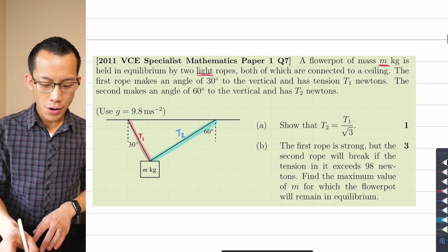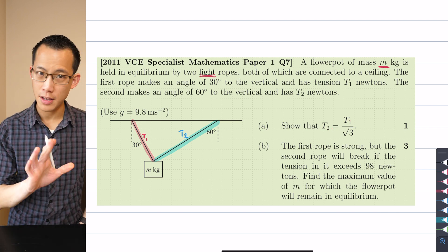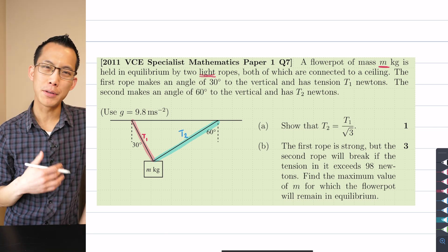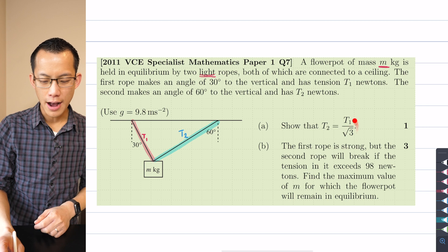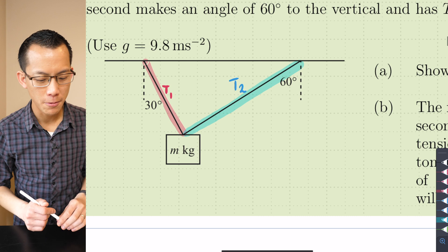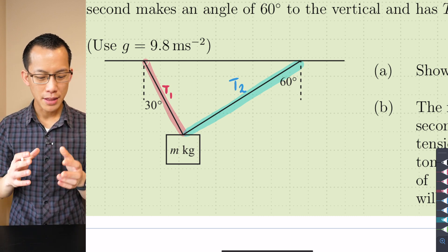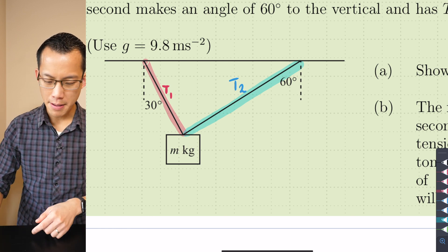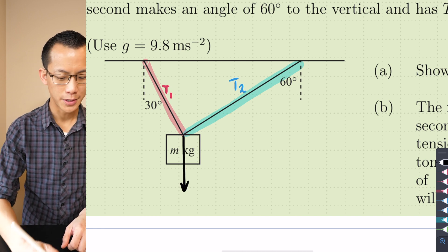Let's have that one going off in that direction and we'll call this one T2. All right, show that T2 equals T1 on root 3. So let's think about this for a second. What we want to try and do here is show the relationship between these two ropes and show that there's this proportional relationship going on here.